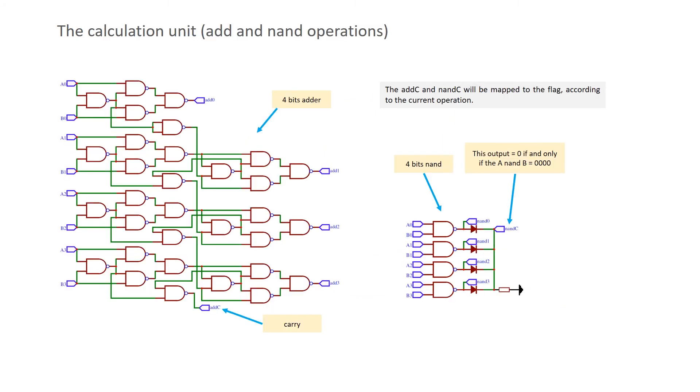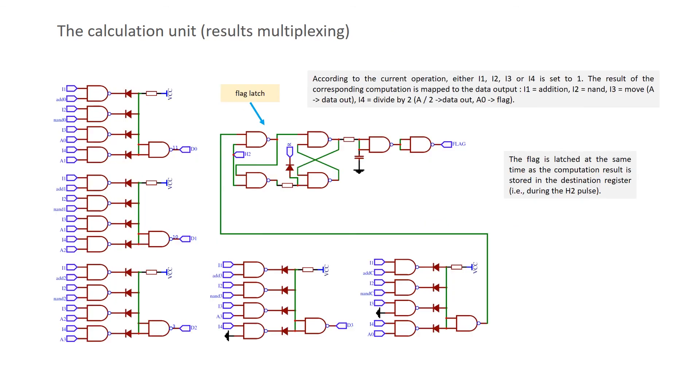Here is the detail of the circuits circulating the addition and the bitwise NAND operation. Here are the multiplexers that map the result to the data inputs of the memory unit.